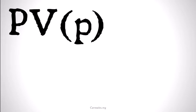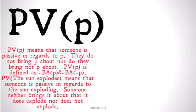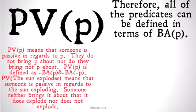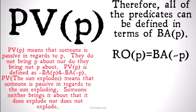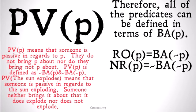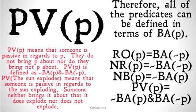There's one more, which compares to optionality in deontic logic: PV, or 'passive regarding P,' means that someone is passive in regards to P — they do not bring P about, nor do they bring not P about. PV is defined as: not BAP and not BA not P. 'PV, the sun explodes' means someone is passive regarding the sun exploding — they neither bring it about that it does explode, nor that it does not. Therefore, all the operators can be defined in terms of BAP: RO is BA not P, NR is not BA not P, NB is not BAP, and PV is not BAP and not BA not P.